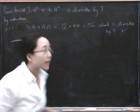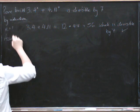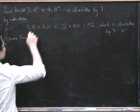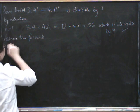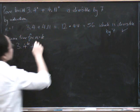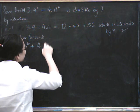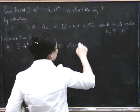So, that deals with the n equals 1 case. Now we assume true for n equals k, that is, that 3 times 4 to the power of k, plus 4 times 11 to the power of k, is divisible by 7.